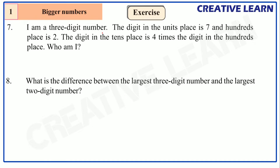Next question: I am a three-digit number. The digit in the units place is seven, the digit in the hundreds place is two, and the digit in the tens place is four times the digit in the hundreds place. Who am I? Let's find the solution.